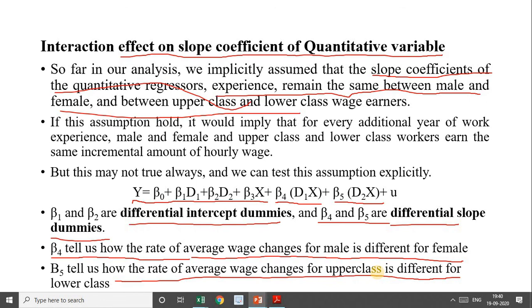This is all for today's session. We can include interaction effects between two dummies as well as between a dummy and a quantitative variable. When the interaction is between a dummy and a quantitative variable, we get both differential intercept coefficients and differential slope coefficients. I will cover the second and third uses of dummy variables in the next video. Thank you.